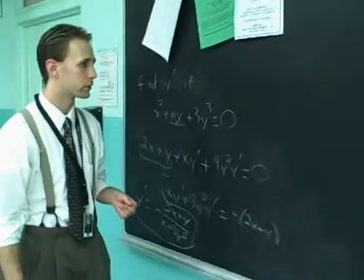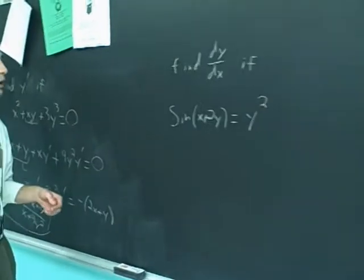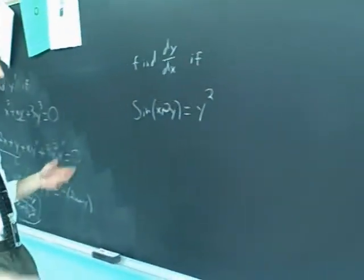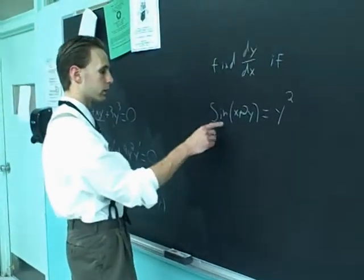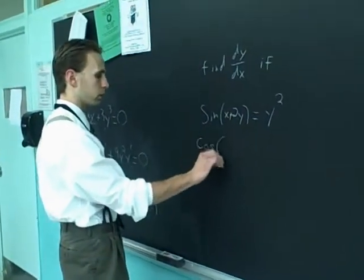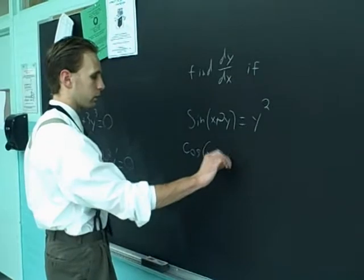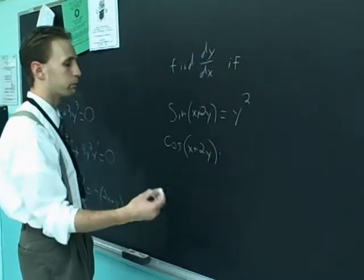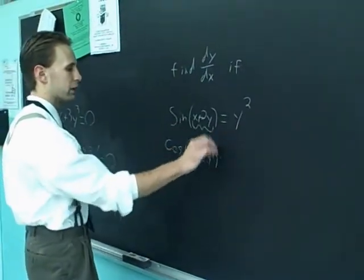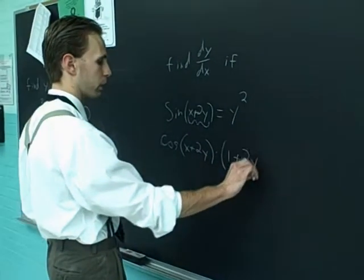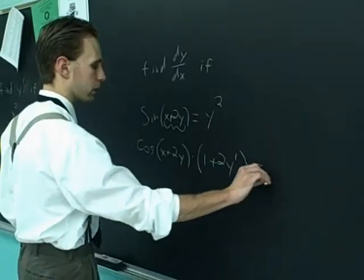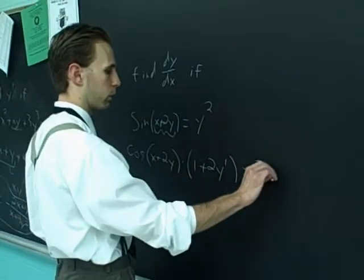Maybe I've shown in this second example here. Find dy dx and isolate it. Differentiate both sides with respect to x. Sine goes to cosine x plus 2y times, by the chain rule, the derivative of the inside, which is 1 plus 2y prime equals, on the other side, 2y y prime.